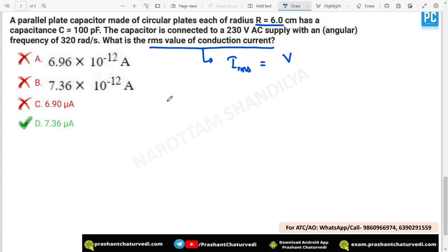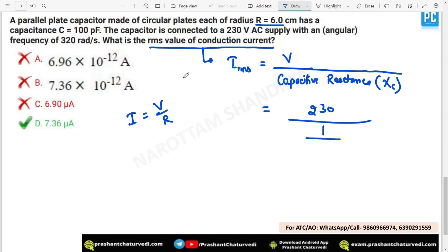But right now, we are talking about capacitance. That is why in the denominator, resistance will not come. It will be capacitive reactance, which is represented by Xc. That will be IRMS in case of this one. Voltage, it has been given. AC voltage is there. Divided by capacitive reactance is given by 1 upon Omega C. Omega, that frequency has been already given to you. That is 320.